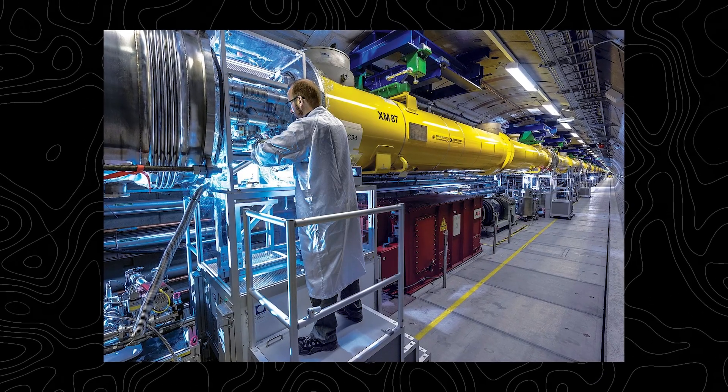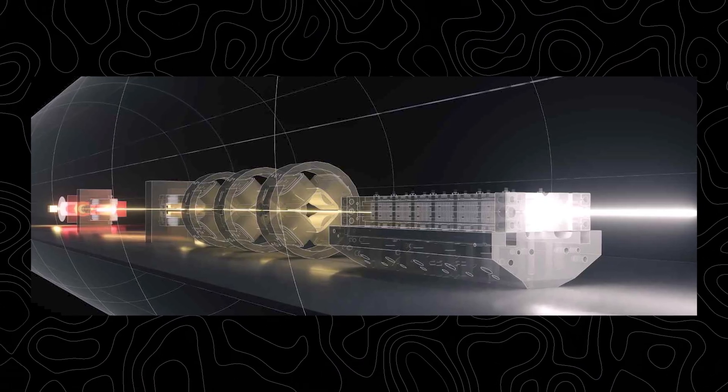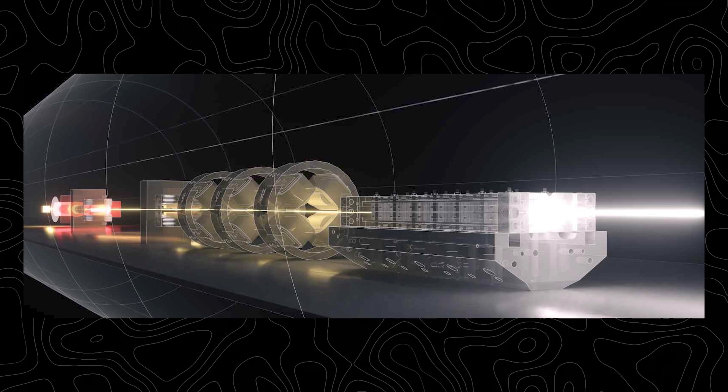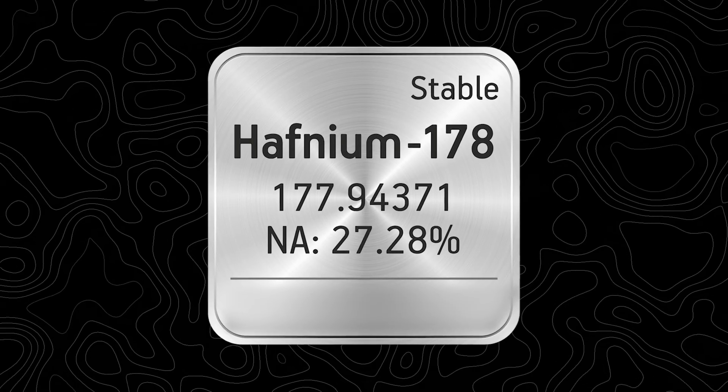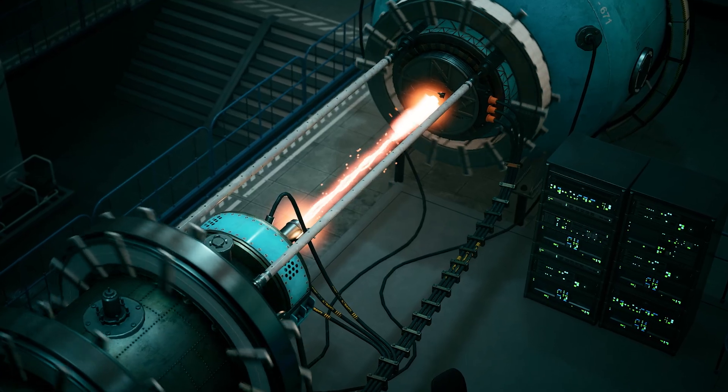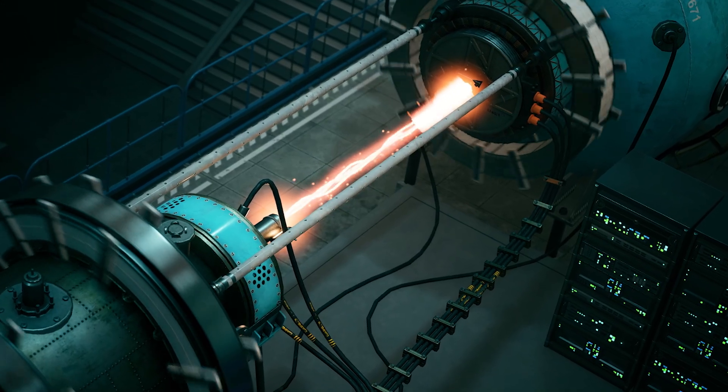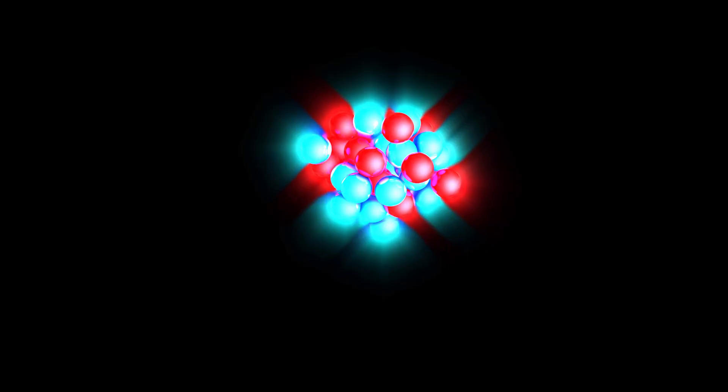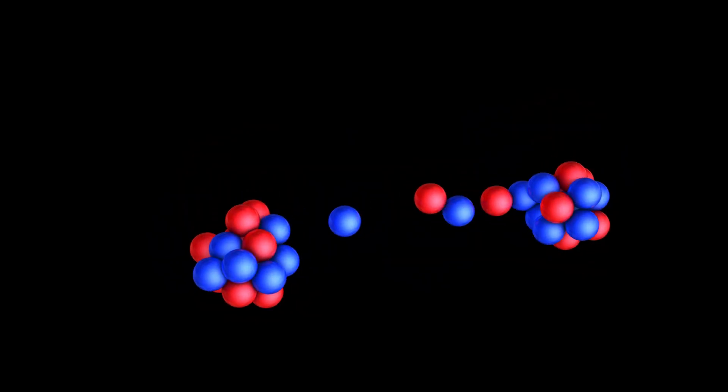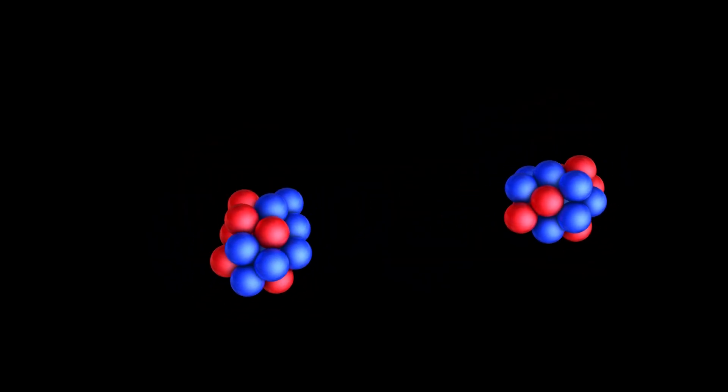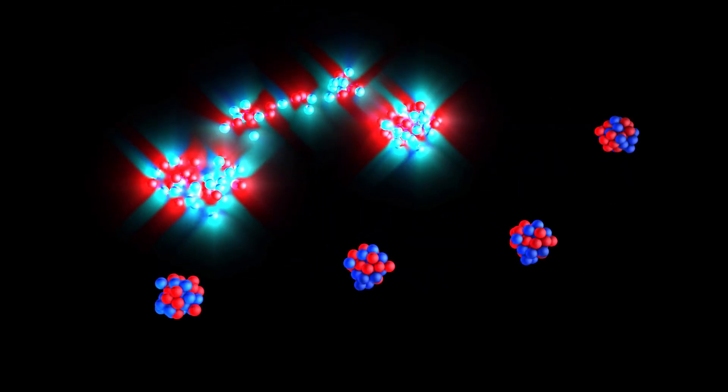In a recent landmark experiment, scientists aimed one of these lasers at a specific isomer, hafnium 178 M2. They fired a specific frequency of X-ray, a specific note, and the safe clicked open. The isomer released its stored energy in a controlled, massive burst of gamma radiation. They found the universe's cheat code.